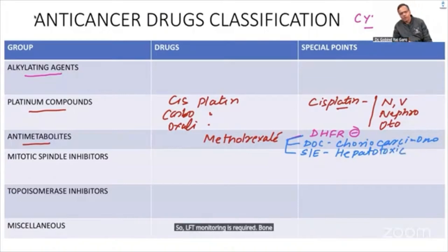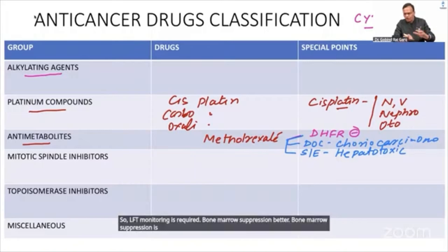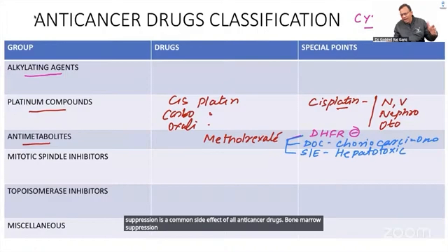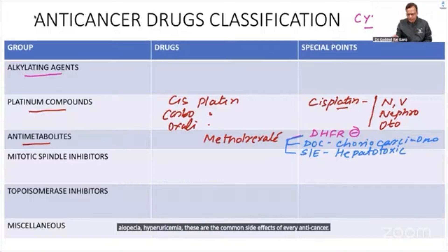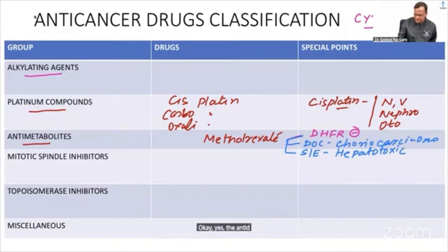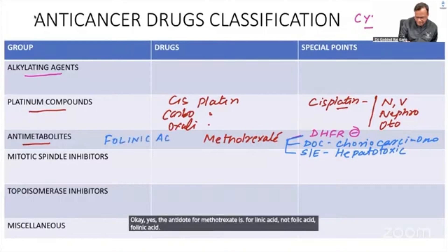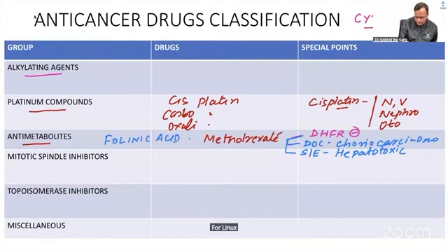Bone marrow suppression, diarrhea, alopecia, and hyperuricemia are common side effects of all anti-cancer drugs. The antidote for Methotrexate is folinic acid — not folic acid — folinic acid.